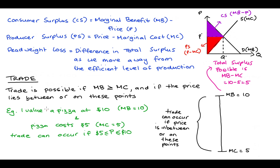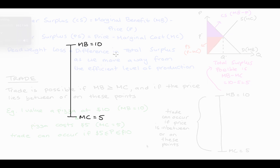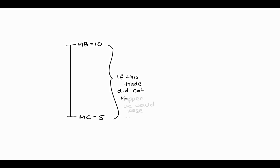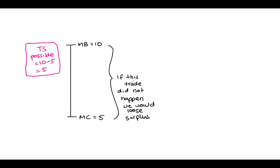Let's now think about connecting deadweight loss to this discussion. Using the example where the marginal benefit of consumption was $10 and the marginal cost was $5, imagine if this trade did not happen — some interference or circumstance meant there was no trade, even though marginal benefit was higher than marginal cost. We would lose out on the possibility of that surplus. The total possible surplus was $5, so we would lose out by $5. Economists refer to this as allocative inefficiency, and this loss in potential surplus we call deadweight loss.